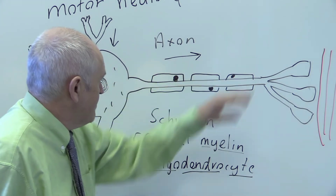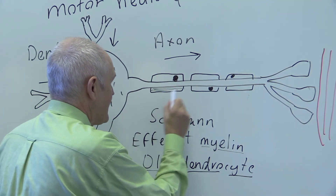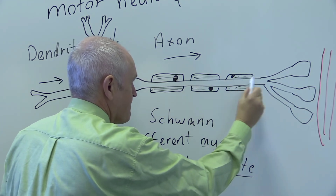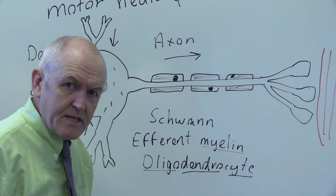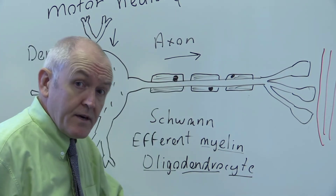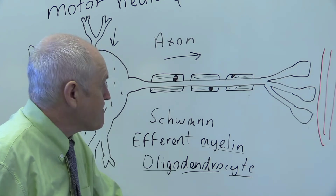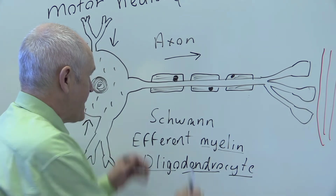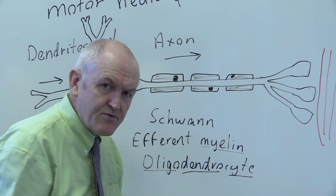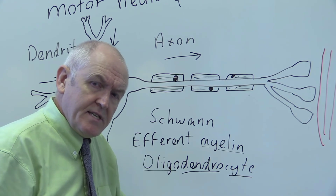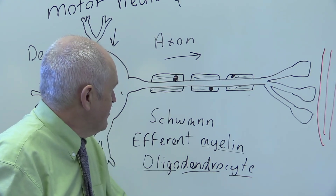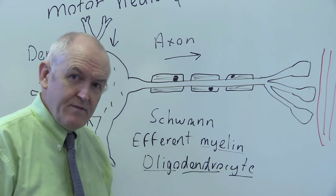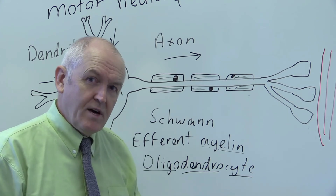The myelin sheath, made up by the layers of the Schwann cells, insulates the nerve fiber, protects it against damage, and also nourishes it. If there's any damage to the nerve fiber, the Schwann cells are instrumental in facilitating healing of the nerve fiber. But they do something else as well.